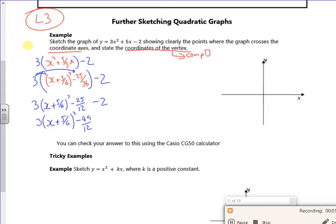Right. So what do I know then? Because it's plus 3 at the front, it's a U shape. I know the vertex is (-5/6, -49/12). So I've got that information.